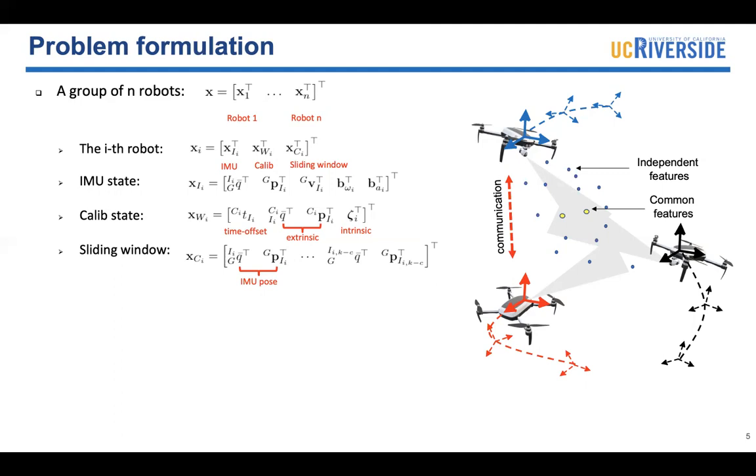By using the cameras, the robots can observe many environmental features. We divide the features into independent features and the common features. Common features are the features that can be observed by more than one robot. This will be the constraint to improve the localization accuracy.